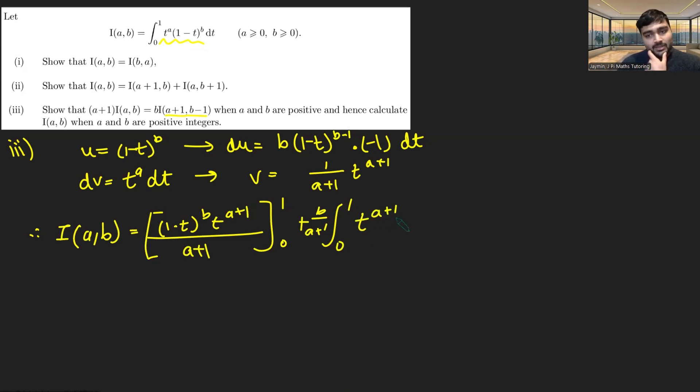And then I'm going to have b over a+1 as a constant out the front. And then I've got t to the a+1 times 1 minus t to the b-1 dt, like so.